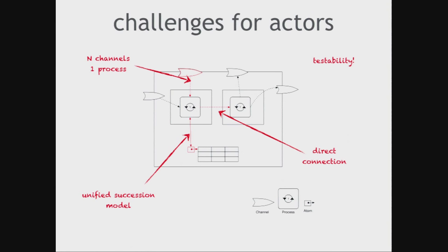The actor model doesn't say anything about how to do state inside an actor — typically it's up to your own recognizance. So either it's purely functional, which is good and recommended, or you do whatever you're used to doing in your language. With Clojure I can use the unified succession model inside. I cannot make a direct connection between two processes with the actor model — if two processes are going to talk, they have to go through a mailbox. Having this level of decomposition that's one level more granular than actors makes it a lot easier to build systems in my view.